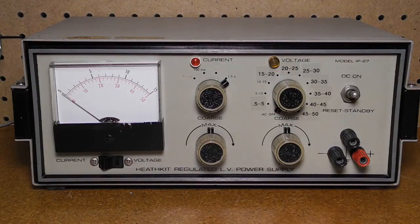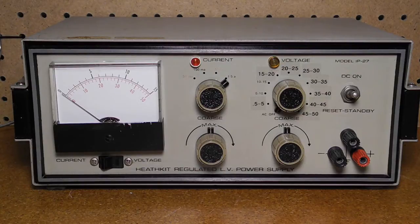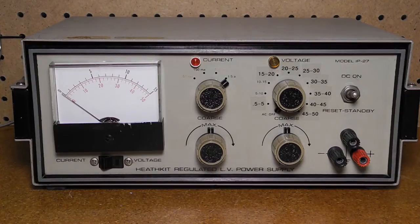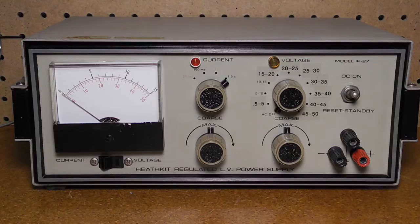A toggle switch selects DC on or reset standby. This allows you to set the unit for specific output voltage and current and then turn off the output, such as when connecting or disconnecting the supply to a circuit under test. The output is protected by current limiting as well as by a relay which protects it against overloads and shorts.